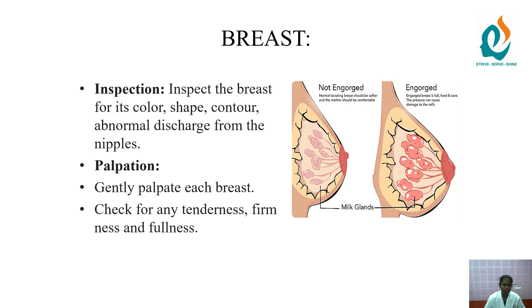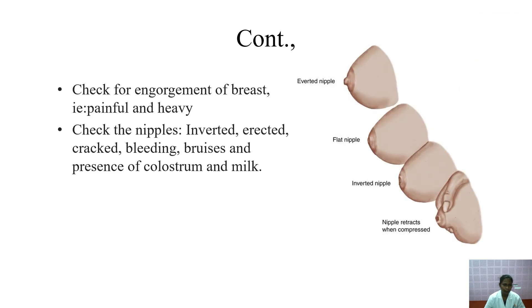First, check the breast. Before the procedure, cover the mother's breast with a towel. On inspection, check the color, shape, contour, and any abnormal discharge from the nipple. On palpation, gently palpate each breast in a rotatory manner to check for tenderness, firmness, or fullness. Check nipple types: everted, flattened, inverted, or retracted. Also check for engorgement, pain, cracks, bleeding, bruises, colostrum, and milk.